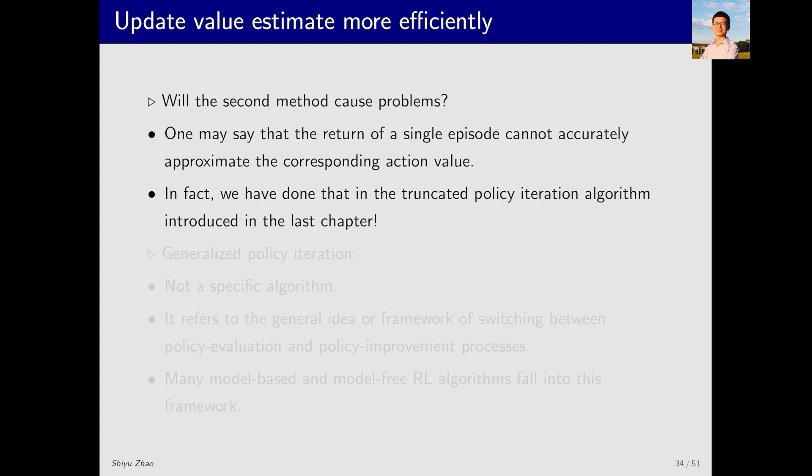Some may say that the return of a single episode cannot accurately approximate the corresponding action value. In fact, we have done similar things in the truncated policy iteration algorithm introduced in the last chapter. Truncated policy iteration involves two steps. The first step is policy evaluation, where we need to compute the state value for the current policy by solving the Bellman equation, which typically requires an infinite number of iterations.